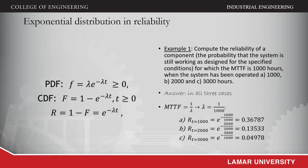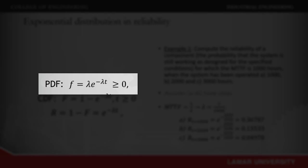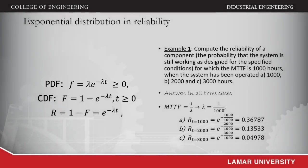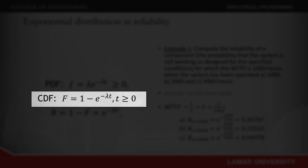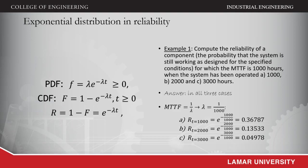The exponential distribution in reliability is very commonly used because it can be used in the phase when the failure rate is constant. The probability density function of the exponential distribution is λe^(−λt), and the cumulative density function is 1 − e^(−λt). That would be the probability of finding a failure. The probability of not finding any failure would be 1 minus F, which can be expressed as e^(−λt).